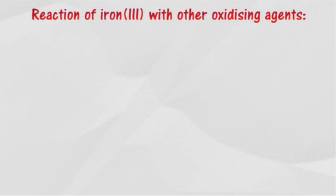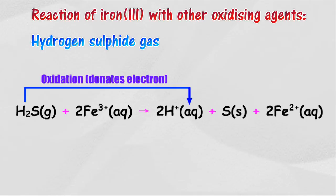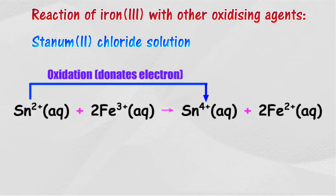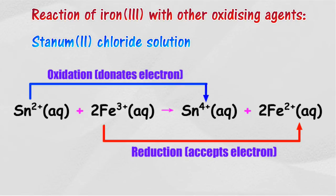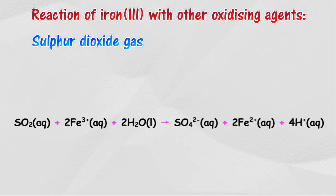Other reducing agents can be used to replace zinc powder for the change of ferrum 3 ion to ferrum 2 ion. They are hydrogen sulfide gas, stannum 2 chloride solution, sodium sulfite or potassium sulfite, and sulfur dioxide gas.